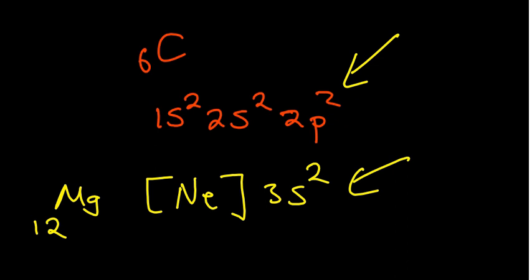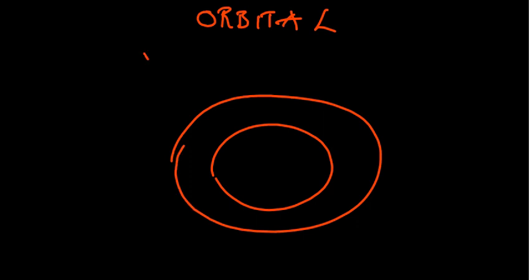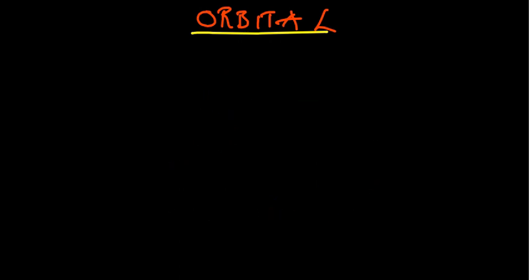So that's basically what we're going to study in this video. Before we begin, we need to understand what an orbital is. In atomic structure, we have energy levels or shells where we find electrons. Electrons do not necessarily exist on the shells as represented on diagrams. An exact location where there's a high probability of finding an electron is what we call an orbital. An orbital can accommodate a maximum of two electrons.